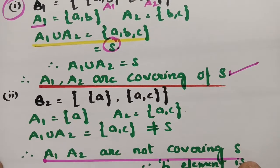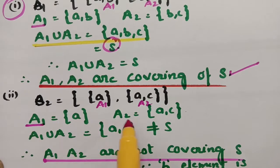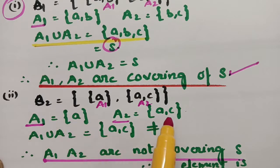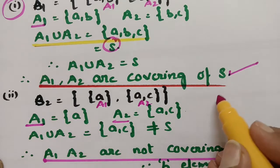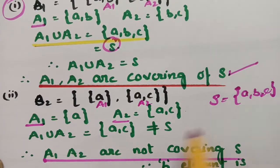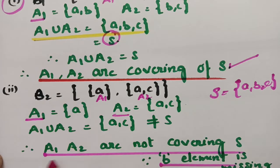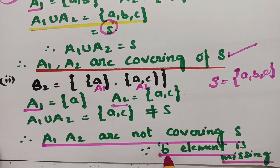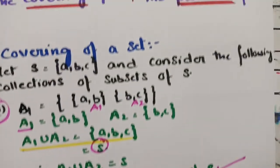For collection B2, consider A1 and A2. There can be common elements — that is fine for covering. But if you make the union, you get {A, C} — whereas S has {A, B, C}. The element B is missing. Therefore A1 and A2 are not the covering of S, since their union is not S. So B2 is not a covering of S.